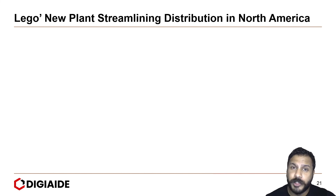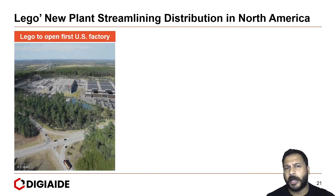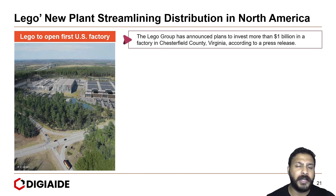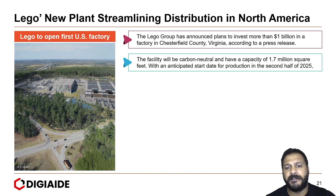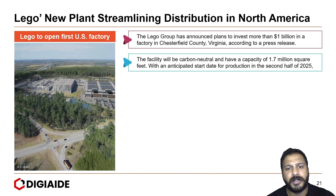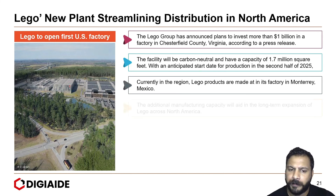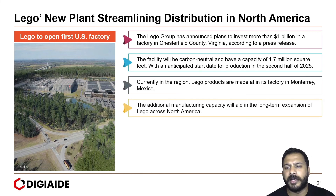Let's look at the final case study of how LEGO's new plant is streamlining distribution in North America. LEGO is set to open its first US factory and has announced plans to invest 1 billion dollars in Chesterfield County, Virginia. The factory will be carbon neutral and have a capacity of 1.7 million square feet, with an anticipated production start in the second half of 2025. Currently in the region, LEGO products are made at a factory in Monterrey, Mexico, and the additional US factory will aid in the long-term expansion of LEGO across North America.